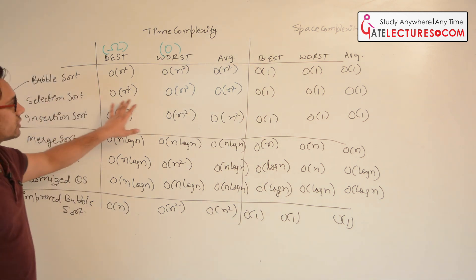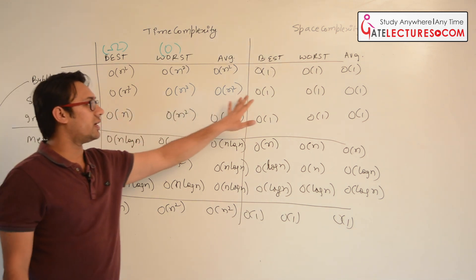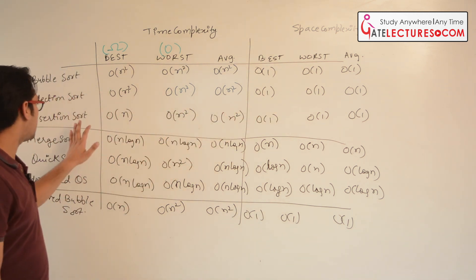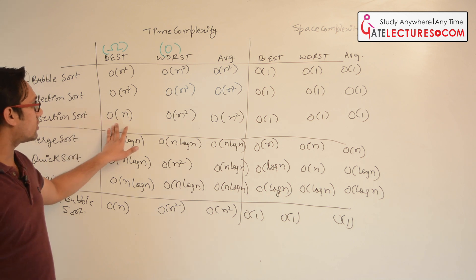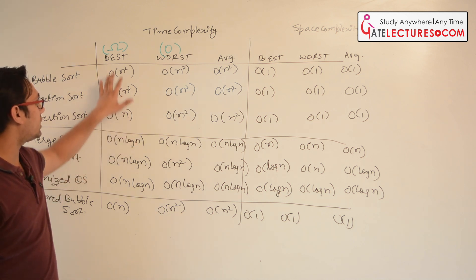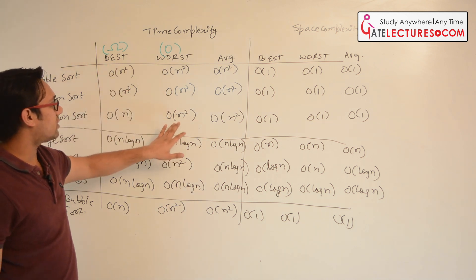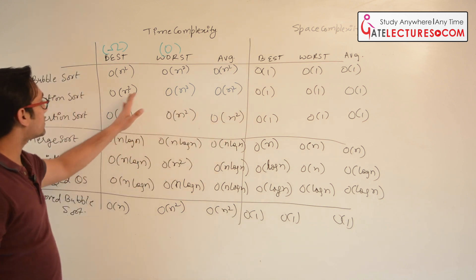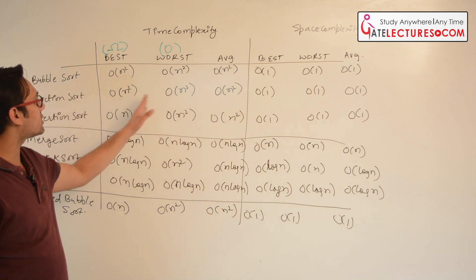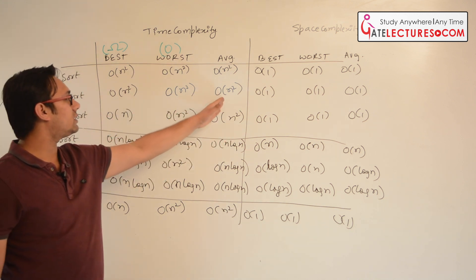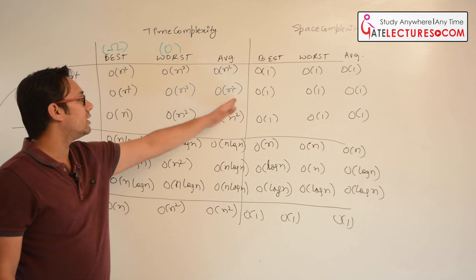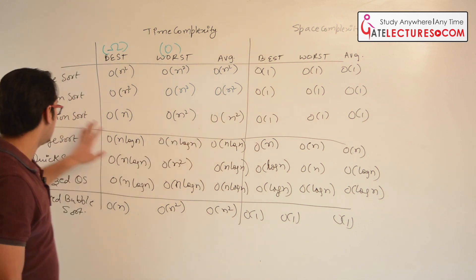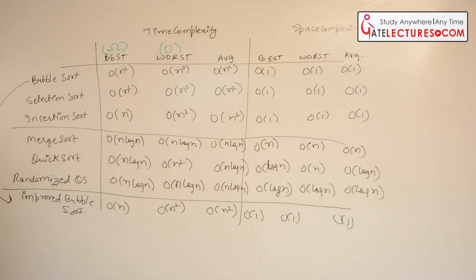In case of selection sort, it takes order of n square in every case. For insertion sort, best case is order of n, worst case is order of n square, and average case is order of n square. When best case and worst case are the same, we can give a theta notation — therefore selection sort is theta of n square.